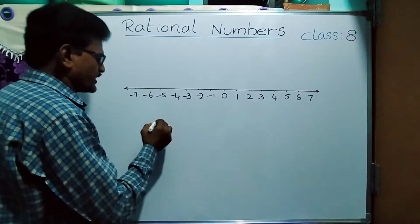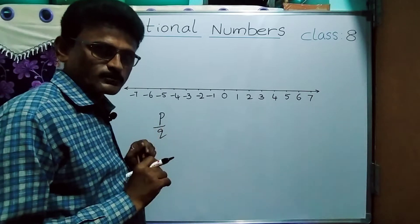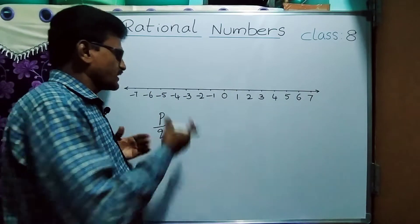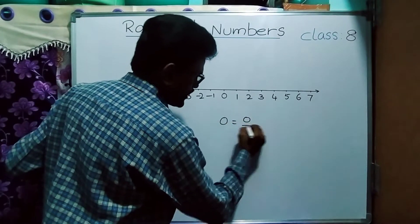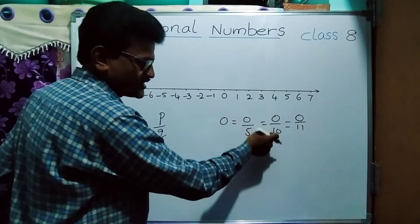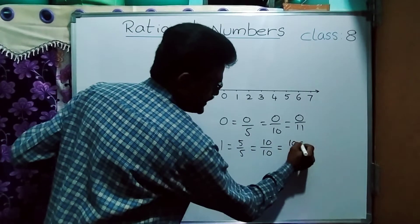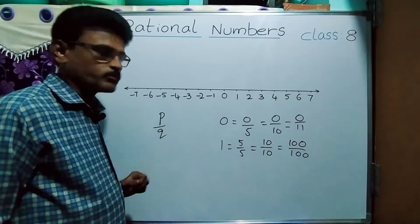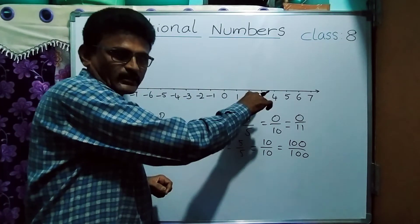Rational numbers means p by q form — fractions. All fractions are rational numbers. How can we say integers are rational numbers? Suppose 0 — you can write it as 0 by 5, 0 by 10, 0 by anything; it is 0 only, so it is in p by q form. Suppose 1 — 5 by 5 is 1, 10 by 10 is 1, 100 by 100 is 1, so this is in p by q form. All integers can be written in p by q form, so they are rational numbers.